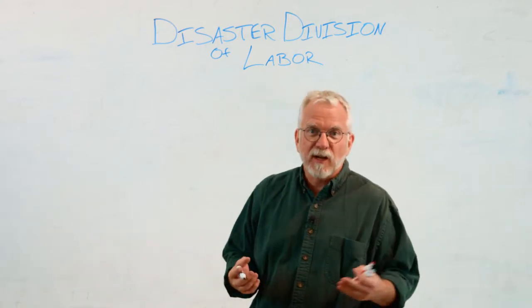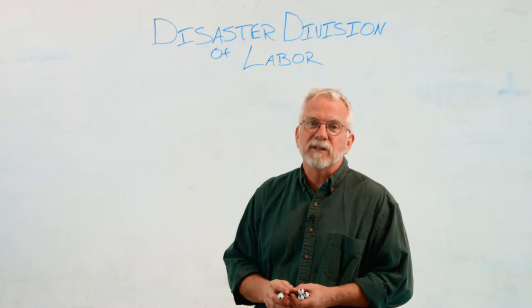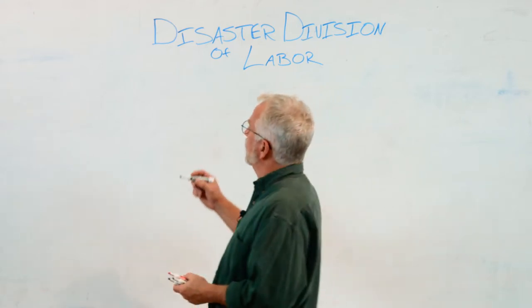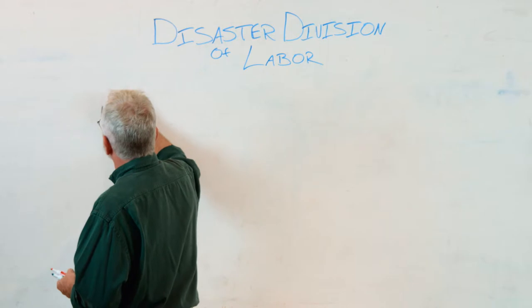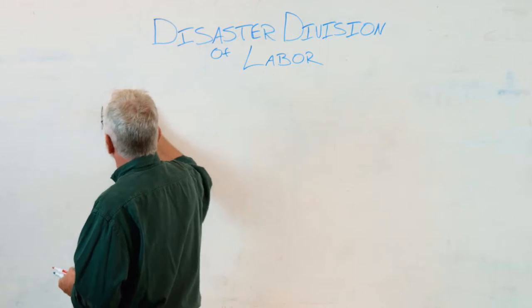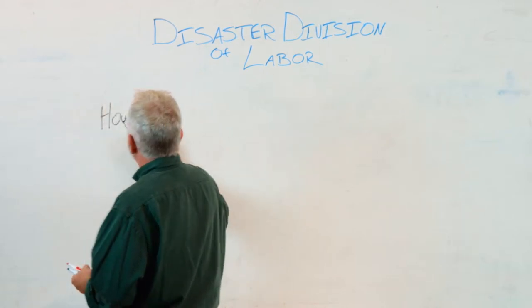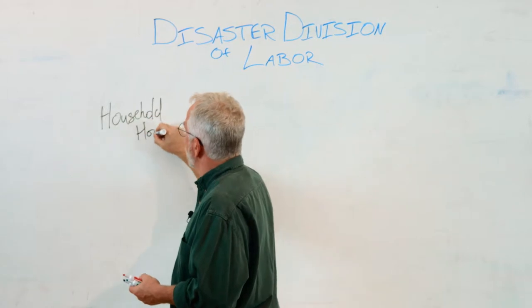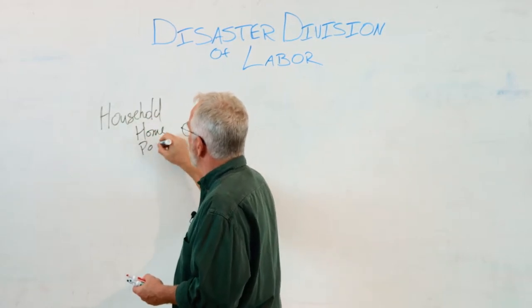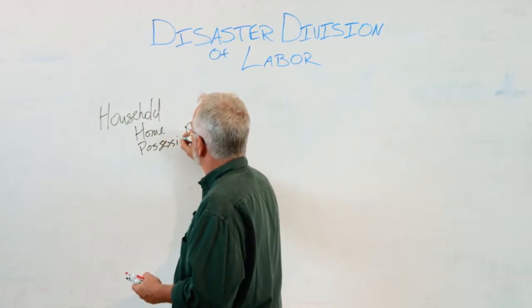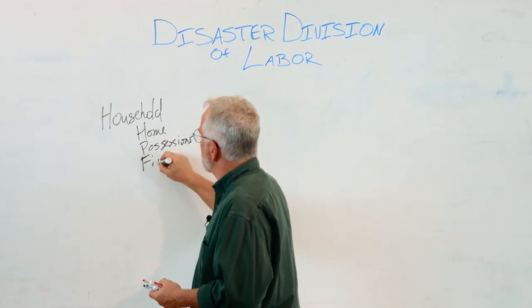There are several different kinds of losses following a disaster, especially a hurricane like the one that we just had here. First, there are household losses, and that can be the home itself, possessions, and financial losses.